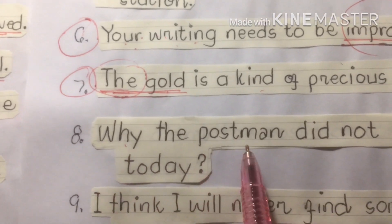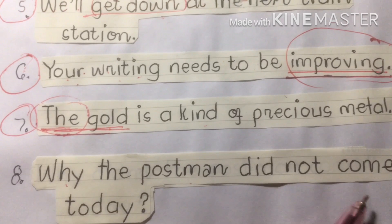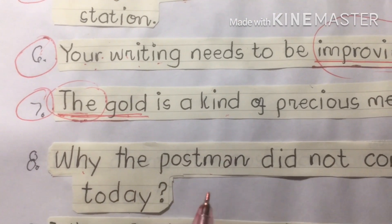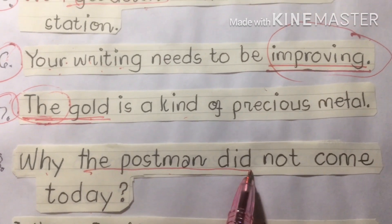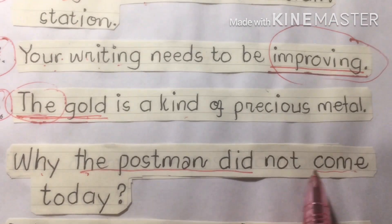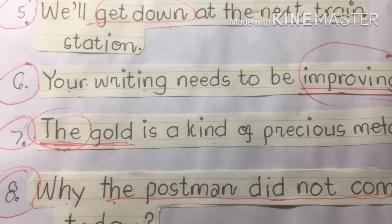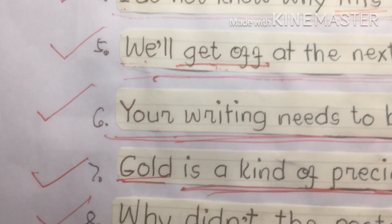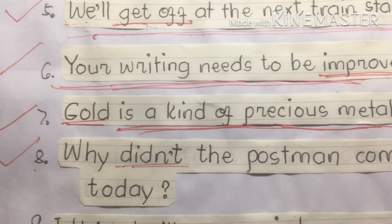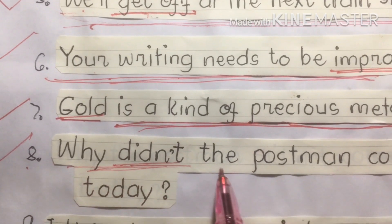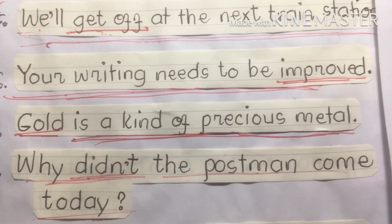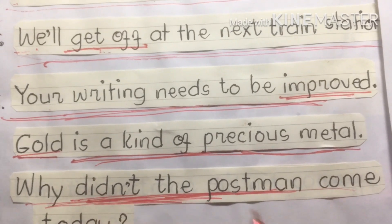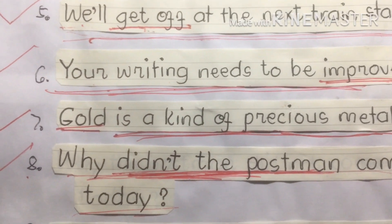Eight: 'Why the postman did not come today?' The incorrect part is 'the postman did not come.' The right version is: 'Why didn't the postman come today?' We highlight 'didn't the postman' as the correct form. That is the right sentence for number eight.